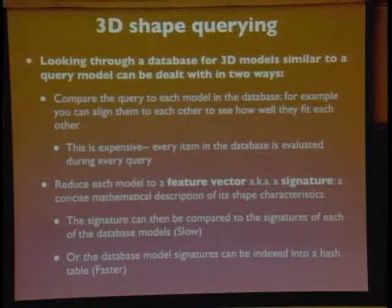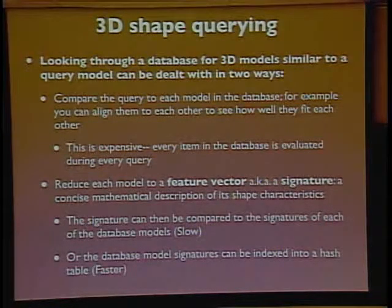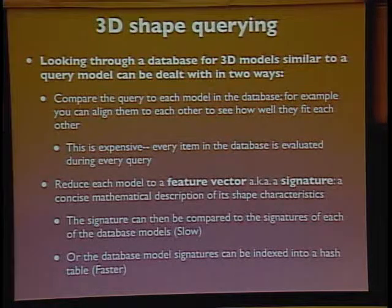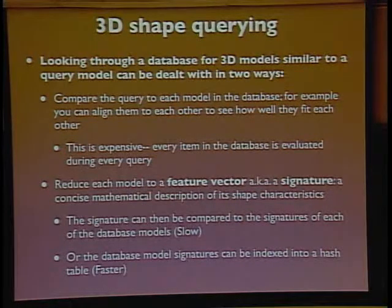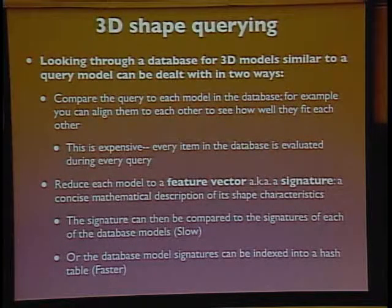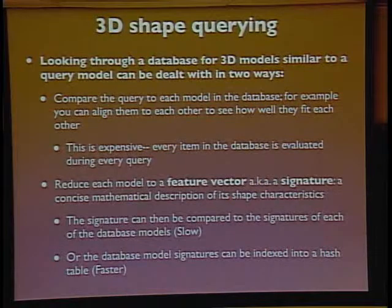There are basically two general approaches for querying a database of 3D models. The first is exhaustive: similar to the difference between exhaustively looking at every patch in a new image versus picking out salient points. In the exhaustive approach, you have your 3D query model and your 10,000 database models — you individually compare your query model to each of the 10,000. That is time consuming, but it's exhaustive, so if there exists a similar model in the database, you will find it.